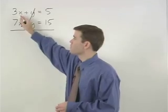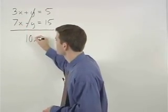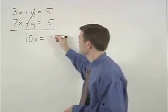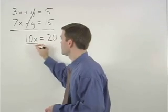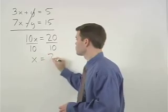On the left, 3x plus 7x is 10x, and on the right, 5 plus 15 is 20. Dividing both sides by 10, x equals 2.